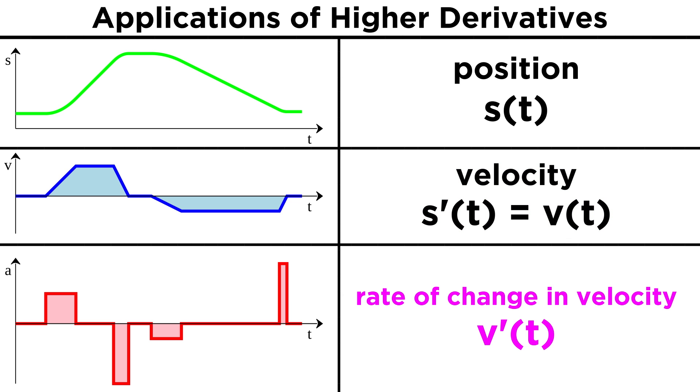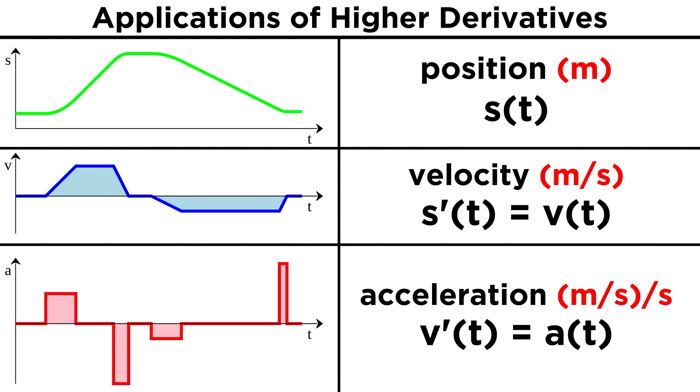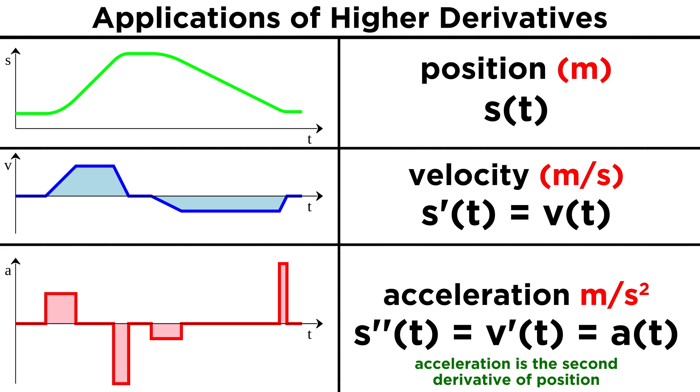But the derivative of this velocity function will be the change in velocity with respect to time, and that's acceleration. Position is meters, velocity is meters per second, and acceleration is meters per second per second, or meters per second squared. That means that acceleration is the second derivative of position, and that A of t equals V prime of t equals S double prime of t.